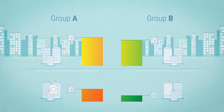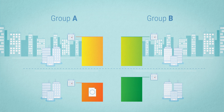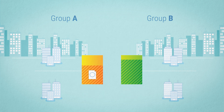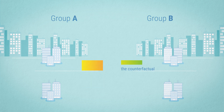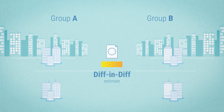Then, consider the difference in average payment days in both groups between Period 1 and 2. Other factors, like growing use of electronic payments, may have affected both changes. We can use Group B as counterfactual — which is what would have happened to Group A without the regulation. The difference between the change in average payment days in Group A and Group B is the DIF in DIF estimate of the average effect of the regulation.